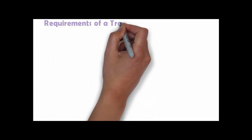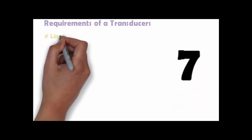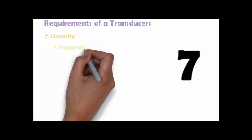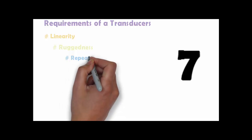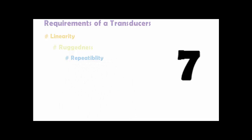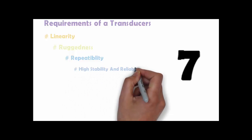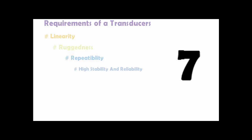There are some requirements of a good transducer, classified into seven points. Point one is linearity — the input-output characteristic of a transducer should be linear. Point two is rigidness — it should withstand overload, with measures of overload protection. Point three is repeatability — the transducer should produce identical output signals when the same input is applied at different times under the same environmental conditions. Point four is high stability and reliability — the transducer should not be affected by temperature, vibration, and other environmental variations.